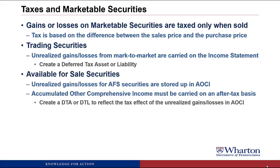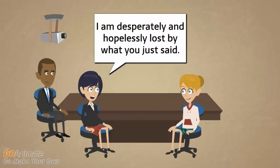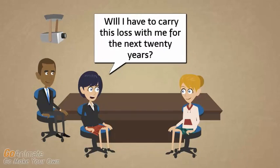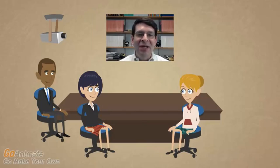For available-for-sale securities, it's a little more complicated. We also mark the marketable securities to market value and have unrealized gains and losses, but these are stored up in accumulated other comprehensive income, or AOCI. Remember, AOCI has to be carried after tax — it's like retained earnings, which has to reflect an after-tax number. So we're going to have to create a deferred tax asset or liability to reflect the tax effect of the unrealized gains or losses that we put into AOCI. I'll clarify this on the next few slides with detailed examples.